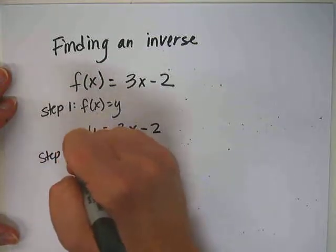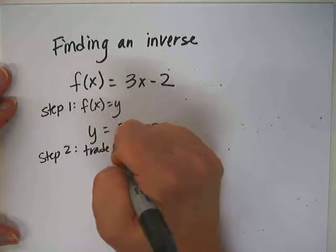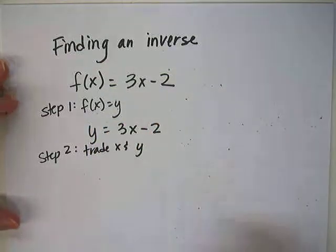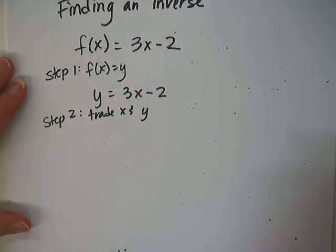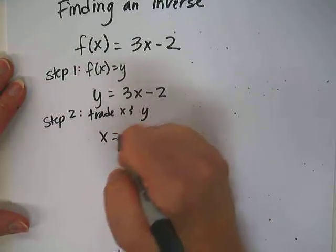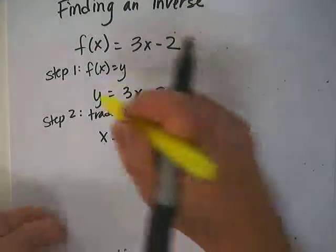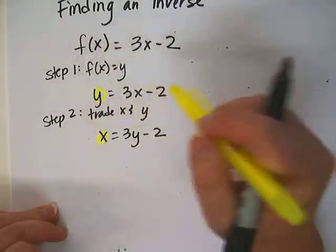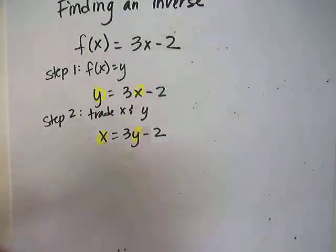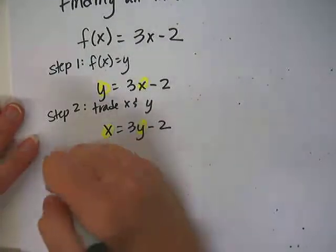Step 2: trade x and y. Why? That's what an inverse is—the x and y trade places. So we'll have x = 3y - 2. See how all I did was simply take the y and turn it into an x, take the x and turn it into a y. The numbers stay in exactly the same places.